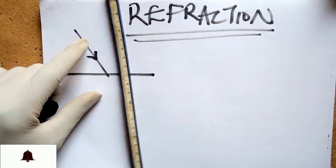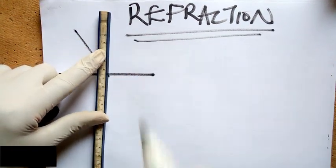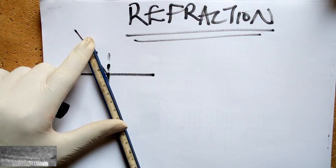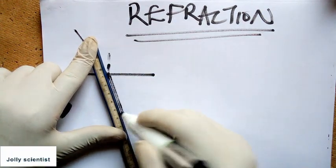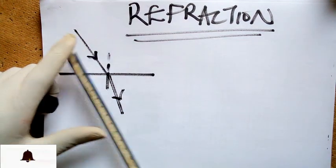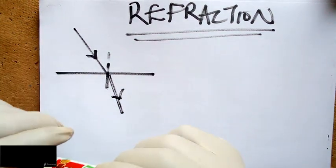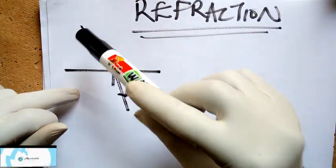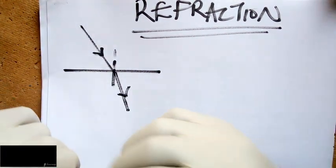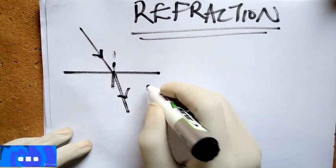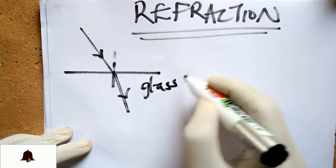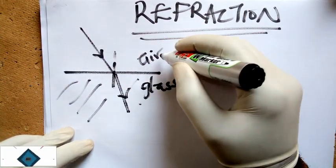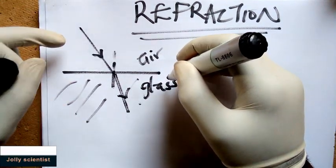We have the incident light, we have our normal, and then we have the light being refracted here. Now, refraction is this bending of light as it travels from this medium to this medium. Say this is glass and here it's air. And we have air here.